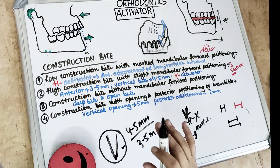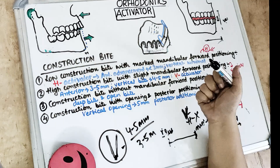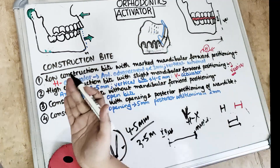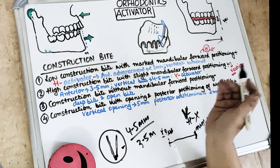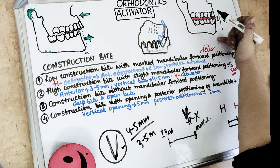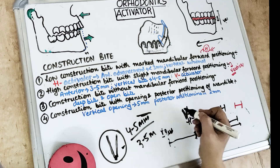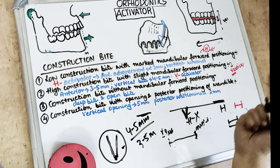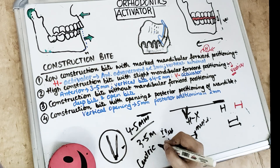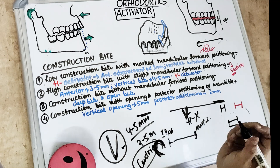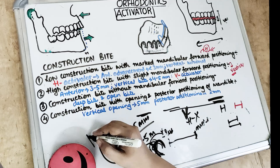The fourth type is the construction bite with opening and posterior positioning of the mandible. Here, instead of forwarding the mandible, we are taking the mandible posteriorly — used in Class 3 malocclusion cases where the mandible is already protruded. The vertical opening in this case is 5 millimeters and the posterior positioning is only 2 millimeters, because the condyle is already at its posterior stop in the glenoid fossa and cannot be moved further posteriorly.